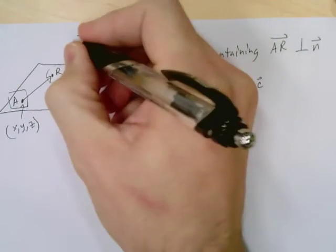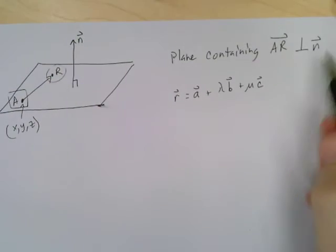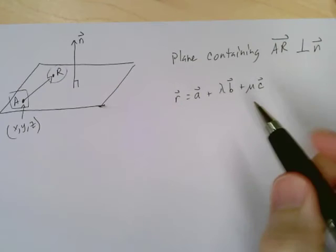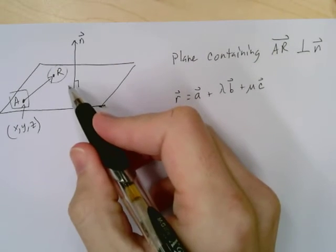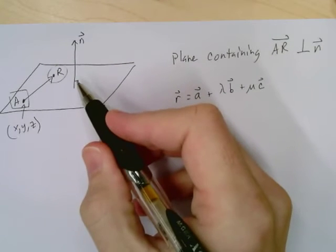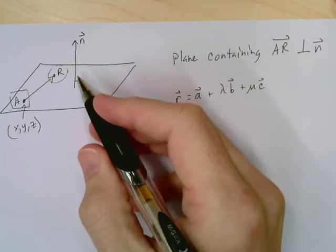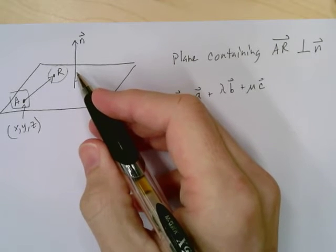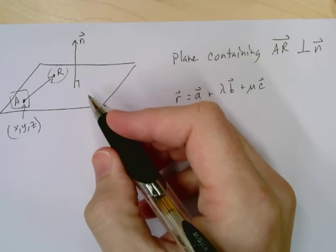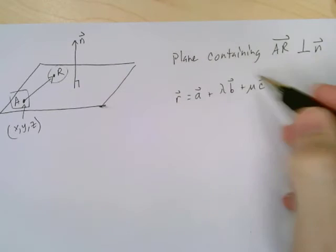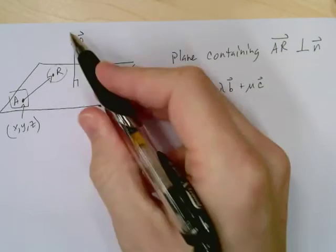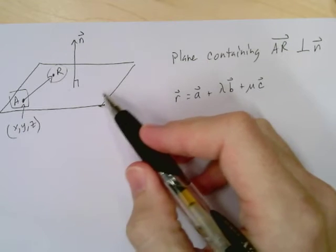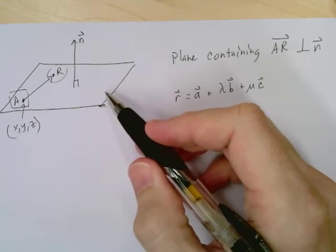We're defining a vector N here. Vector N is perpendicular to this plane, which means that no matter where R is, if I were to project it on N, it would give me a 90-degree angle. Remember we talked about how to find the angle between two lines even if they don't cross. We've got a line that's perpendicular to any AR vector in this plane, which means it's perpendicular to the plane.